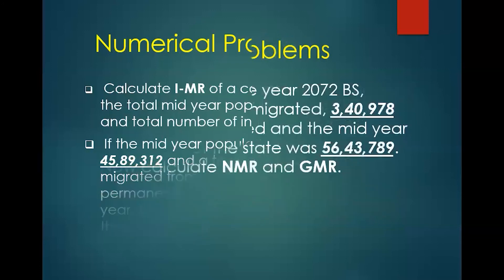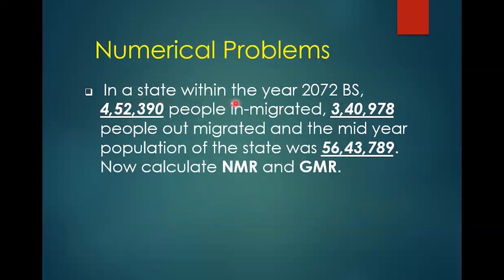Sometimes you are asked a mixed question. For example: in a state in 2007, 4,52,390 people in-migrated, 3,40,978 people out-migrated, and the mid-year population was 56,43,789. You have to calculate both NMR and GMR. Use the respective formulas separately for each.